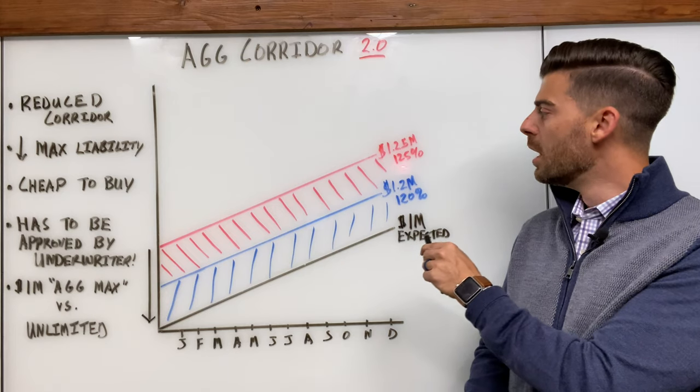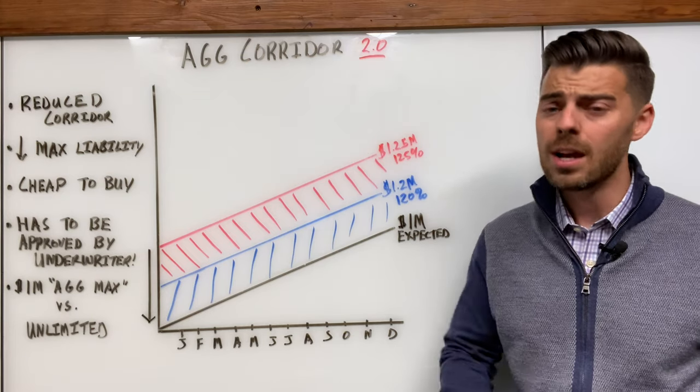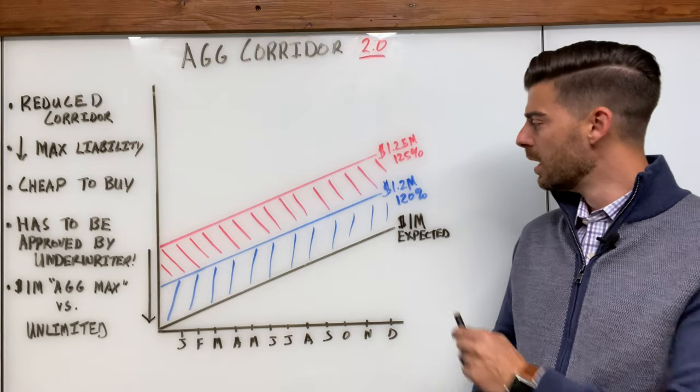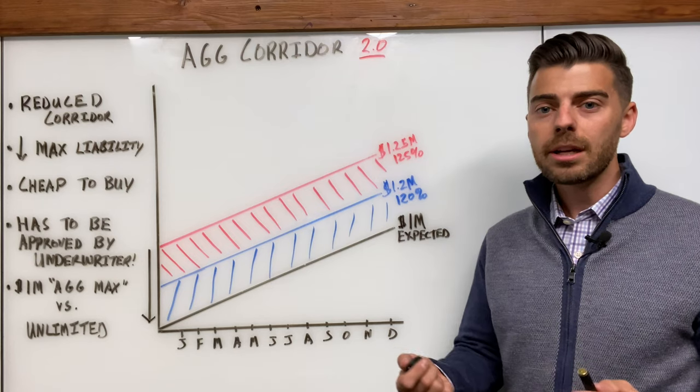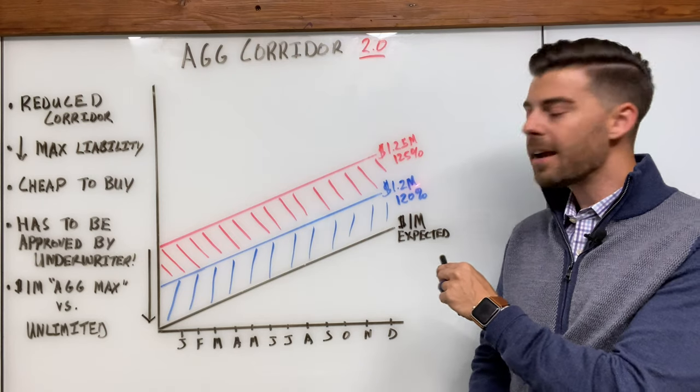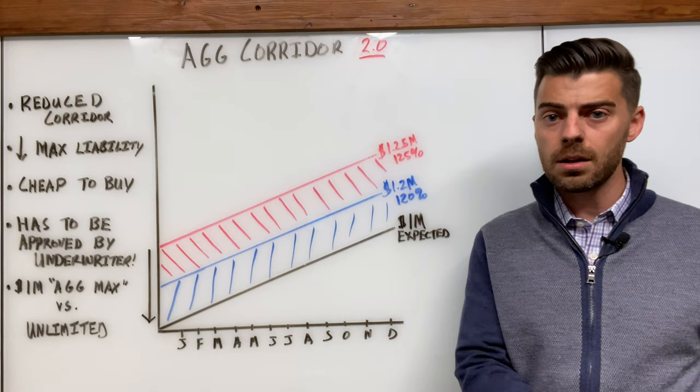If we remember, 125% corridor, on average, gets breached about 2%, maybe 3% of the time, depending on the carrier. So, that doesn't mean you're going to double or triple the likelihood of an aggregate breach if you reduce it by 5%. So, they don't charge you very much. They charge you concurrently based on the risk.